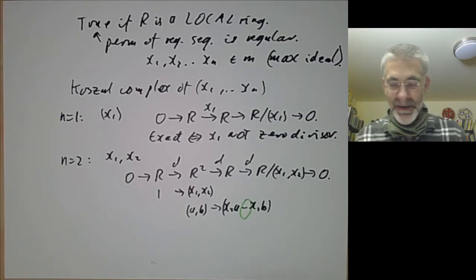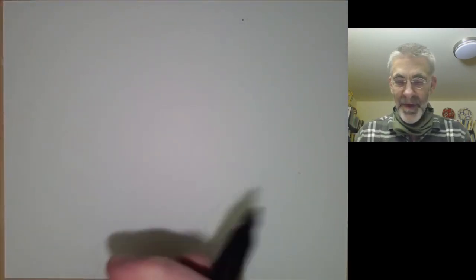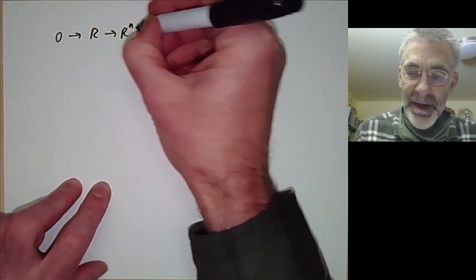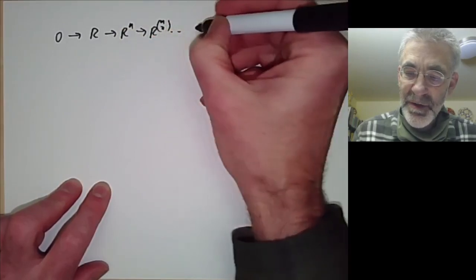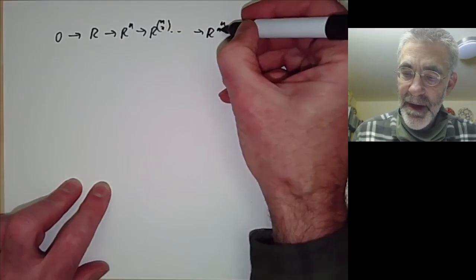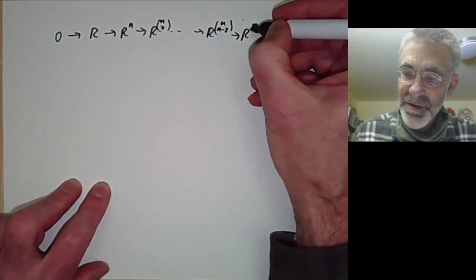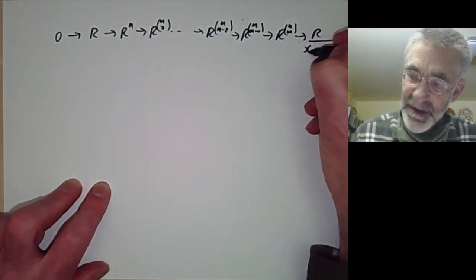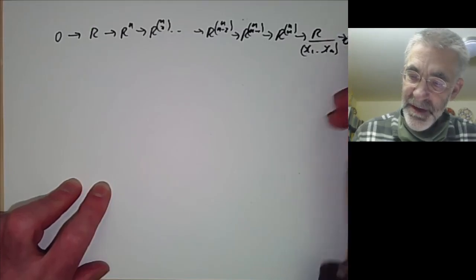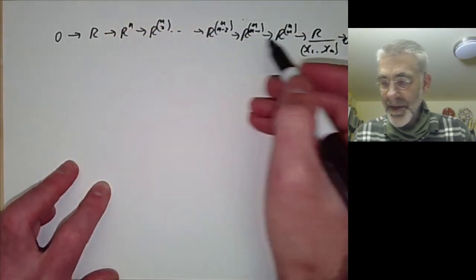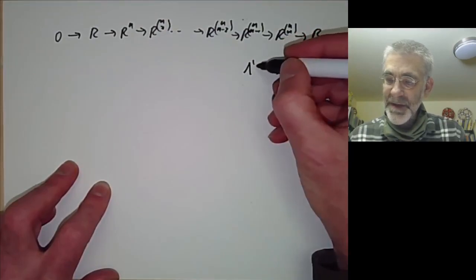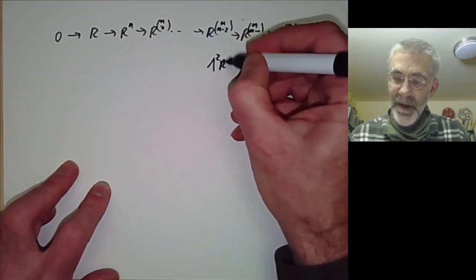In general, the Koszul complex looks like: 0 goes to R, goes to R^n, goes to R^(n choose 2), and so on, all the way up to R^(n choose n-2), goes to R^(n choose n-1), goes to R^(n choose n), goes to R over x1 up to xn, goes to zero. Another way of writing these is as the exterior powers of R^n — so you can think of this as R, the first exterior power, the second exterior power, and so on.